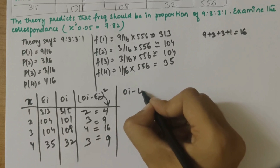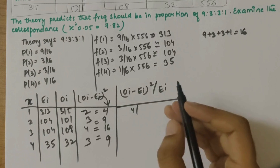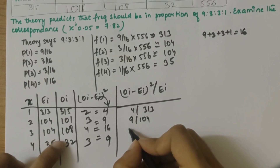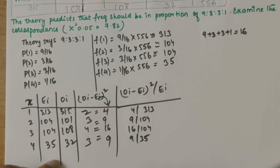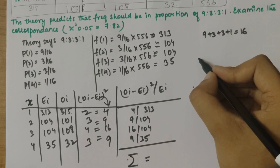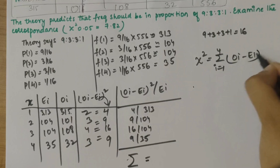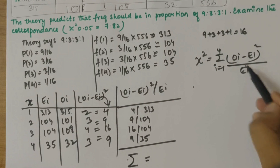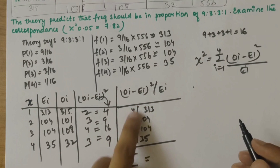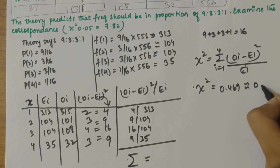Now we compute (oi minus ei) squared divided by ei. So: 4/313, 9/104, 16/104, and 9/35. The chi-square formula is: χ² = summation from i=1 to 4 of (oi minus ei) squared divided by ei. Adding all these values together we get 0.469, approximately 0.5.